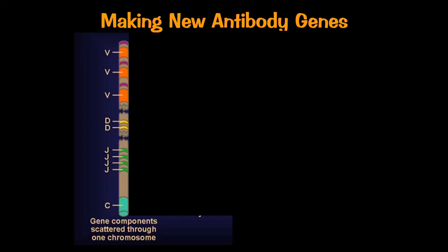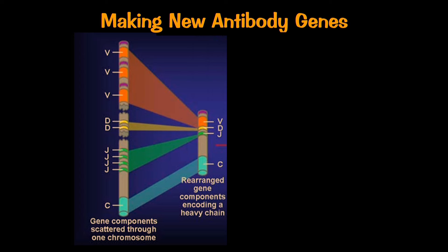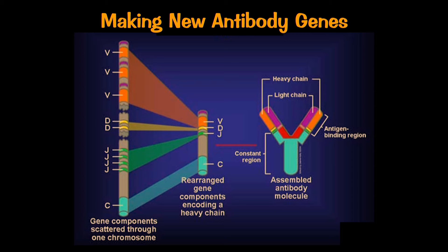Antibodies are produced by B cells, but only after encountering a foreign substance in the body. They do this by making a new gene from several gene templates labeled V, D, and J segments — standing for Variable, Diversity, and Joining Segments. There are 400 possible V gene segments, combined with one of 15 possible D segments and one of four possible J segments, assembled together to make the new antibody gene.